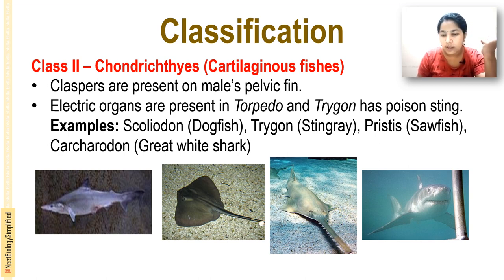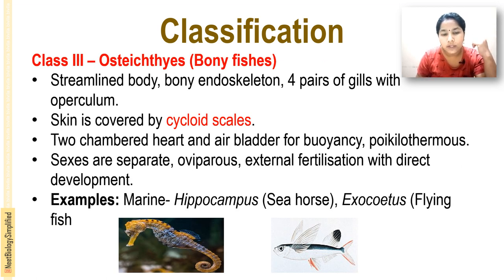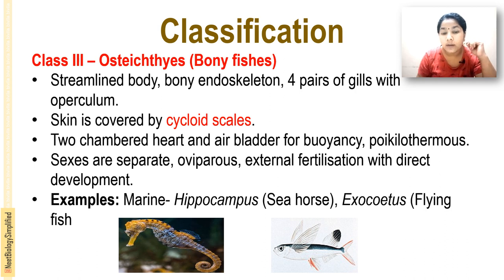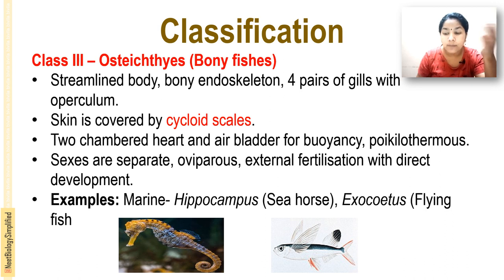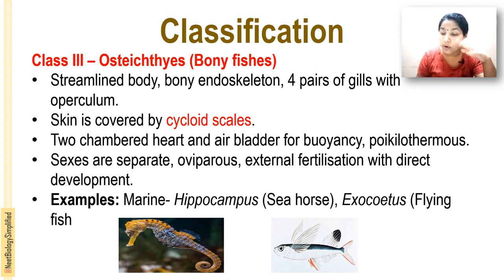Next is Osteichthyes — the bony fishes. They have a streamlined body and a bony endoskeleton, unlike Chondrichthyes which have a cartilaginous endoskeleton. They have four pairs of gills with operculum. Skin is covered by cycloid scales, compared to placoid scales in Chondrichthyes. They also have a two-chambered heart and an air bladder for buoyancy, which helps them float on the surface of the water.